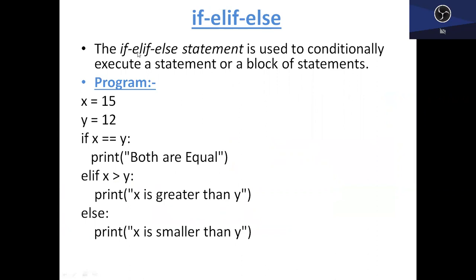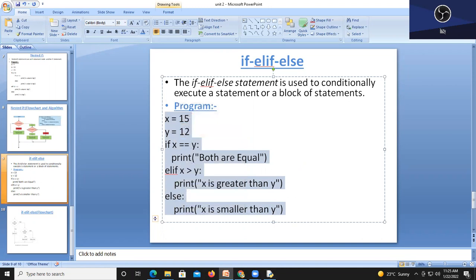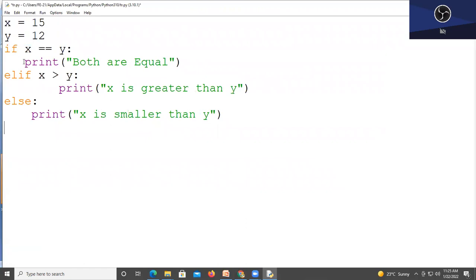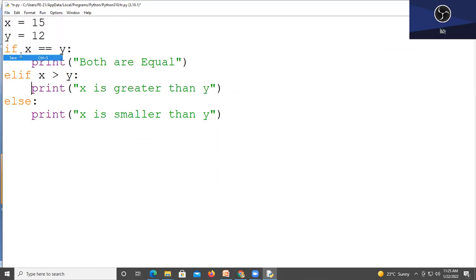Next is the if-elif-else statement, used to conditionally execute a statement or block of statements with multiple type checking. For example: if x == y then 'both are equal.' The next possibility is x is greater than y, so we write elif (else-if) with that condition: 'x is greater than y.' If neither condition is true, we write the else statement — since we have no further condition, by default y is greater than x, so we print 'x is smaller than y.' We can save and run this program.